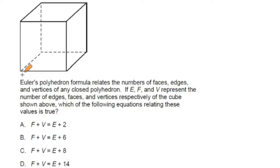It says, Euler's polyhedron formula relates to the number of faces, edges, and vertices of any closed polyhedron. If E, F, and V represent the number of edges, faces, and vertices respectively of the cube shown above, which of the following equations relating these values is true?